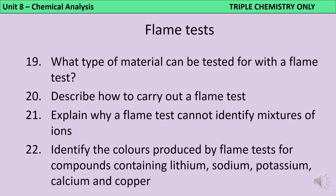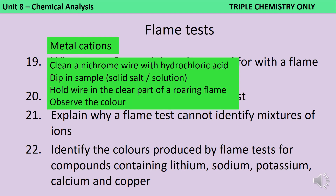Flame tests can be used to indicate the presence of metal cations. To carry out the flame test, you need to clean a nichrome wire, firstly by putting it into the flame to remove any dust, and then by putting it into some hydrochloric acid. Then you take that slightly damp wire and put it either into a solid salt sample or into a solution, and hold that wire right at the edge of a colourless part of a Bunsen burner roaring flame, and observe the colour. You can't use a flame test to identify mixtures of ions, because the two different colours will just obscure each other, particularly if one of them is something very pale, like the lilac flame of a potassium compound.